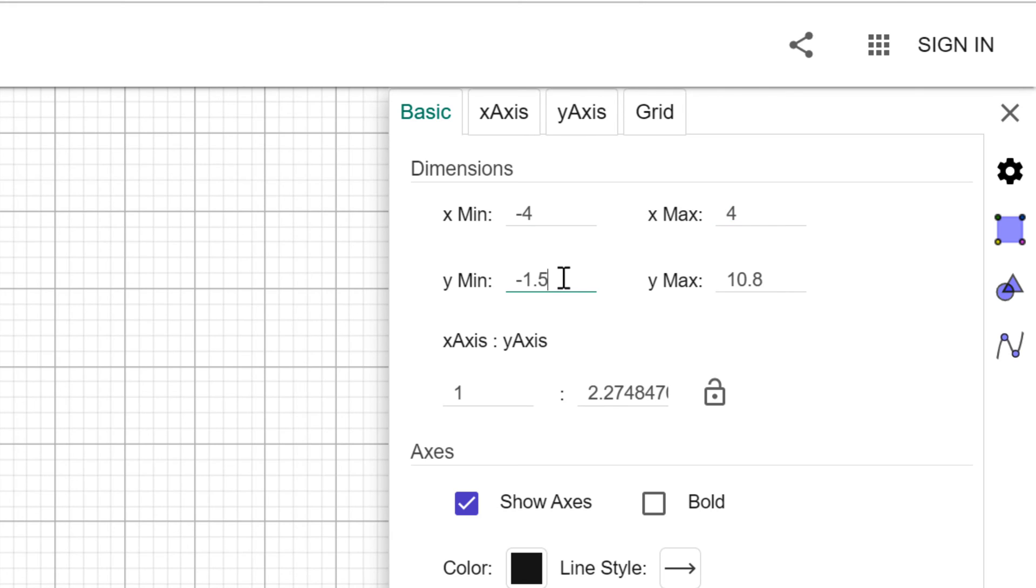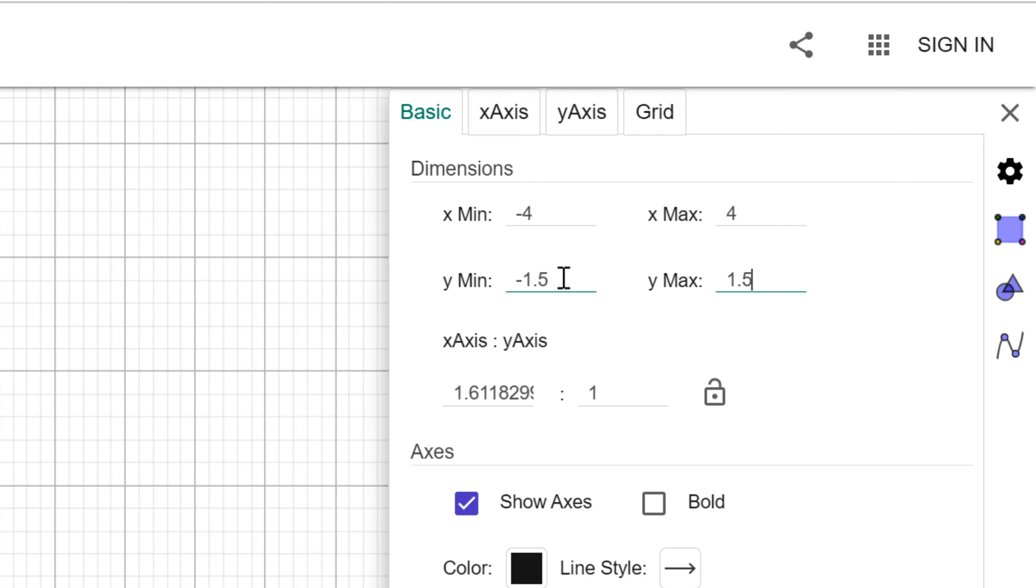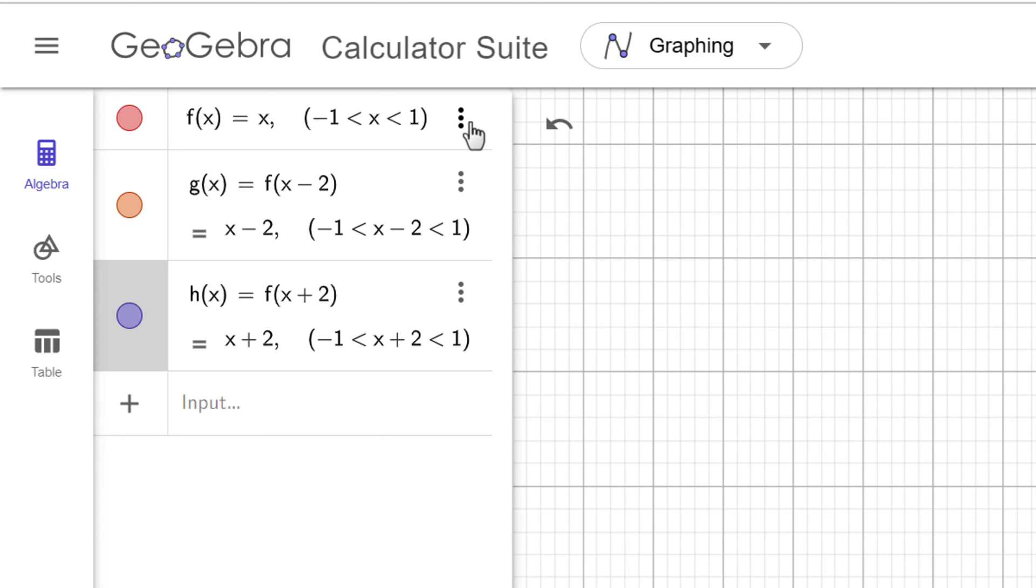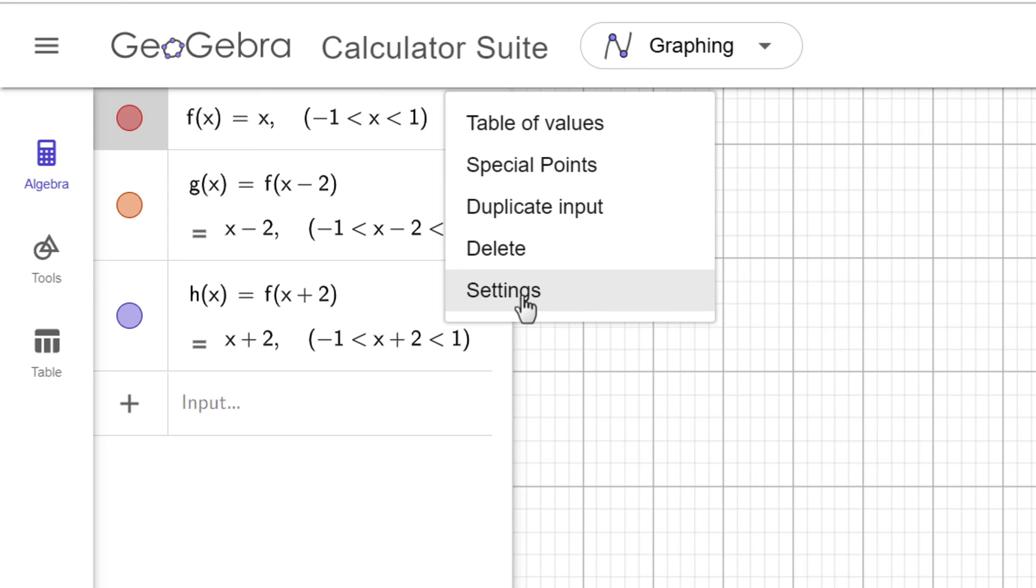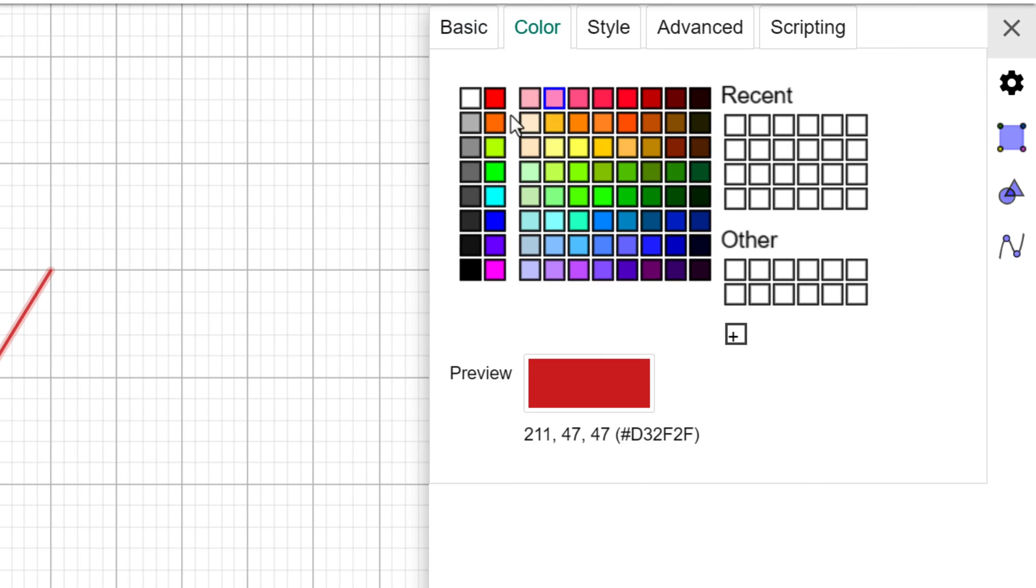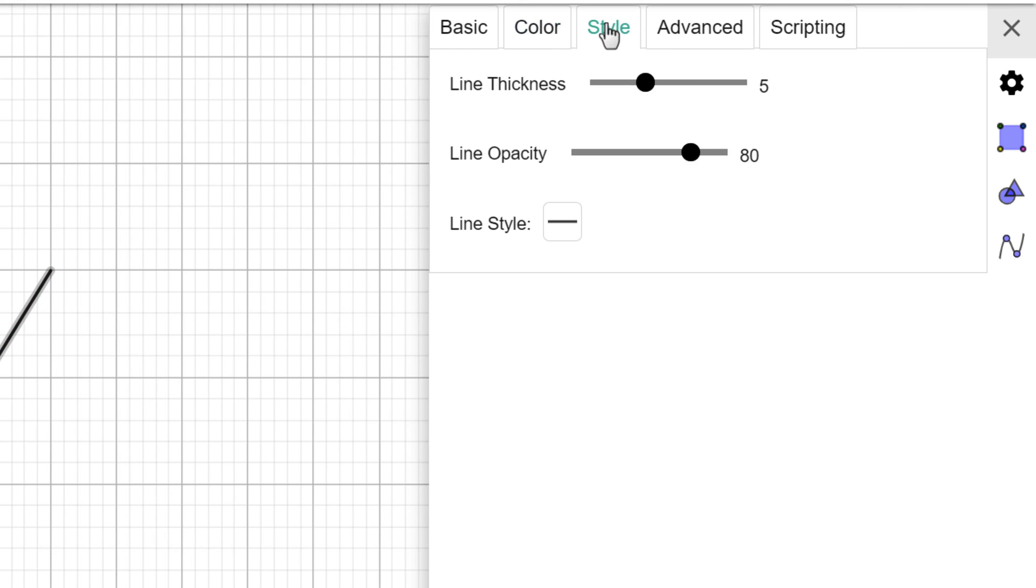To keep the same color of each curve, you can click the triple dot icon for each function and change the color. Go to settings and go to color. I am going to choose black. If you also want to increase the thickness of the curve, then I can also increase to max.